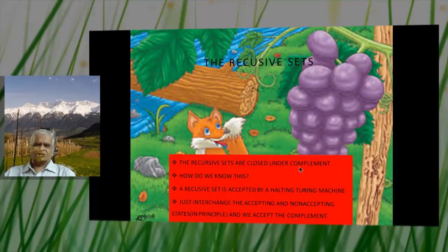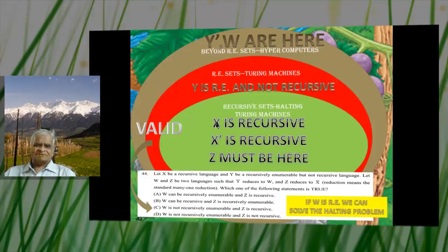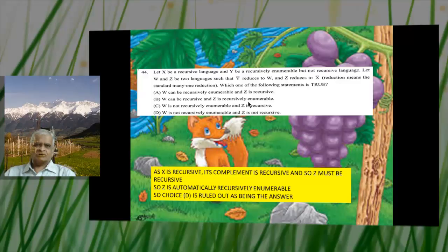The recursive sets are closed under complement. A recursive set is accepted by a halting Turing machine — interchanging accepting and non-accepting states gives a machine accepting the complement. So if X is recursive, its complement is recursive. Therefore Z, which reduces to X complement, must be recursive. Z is automatically recursively enumerable as well. Choice D is ruled out.